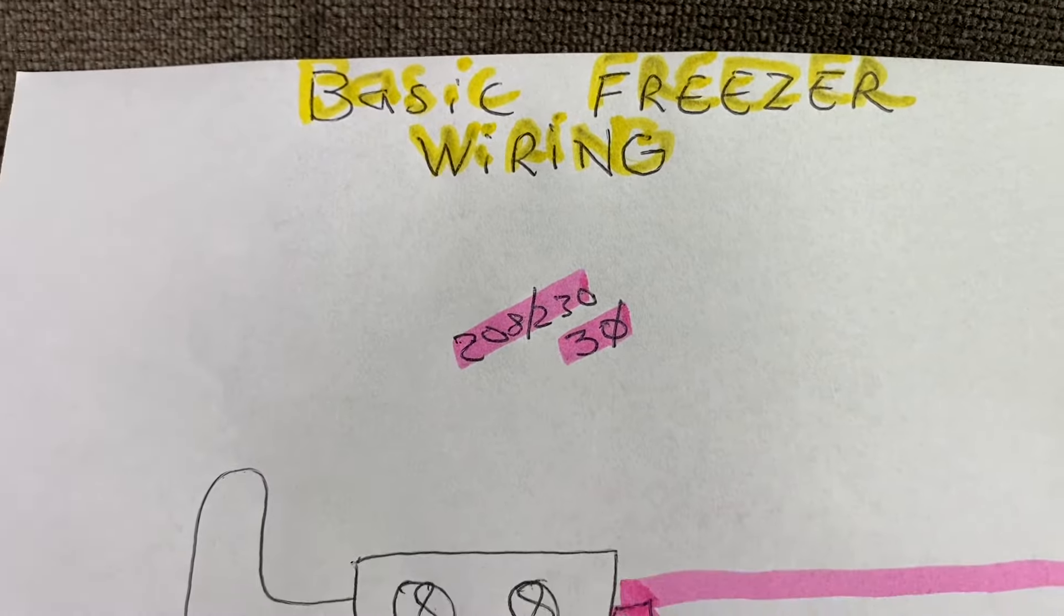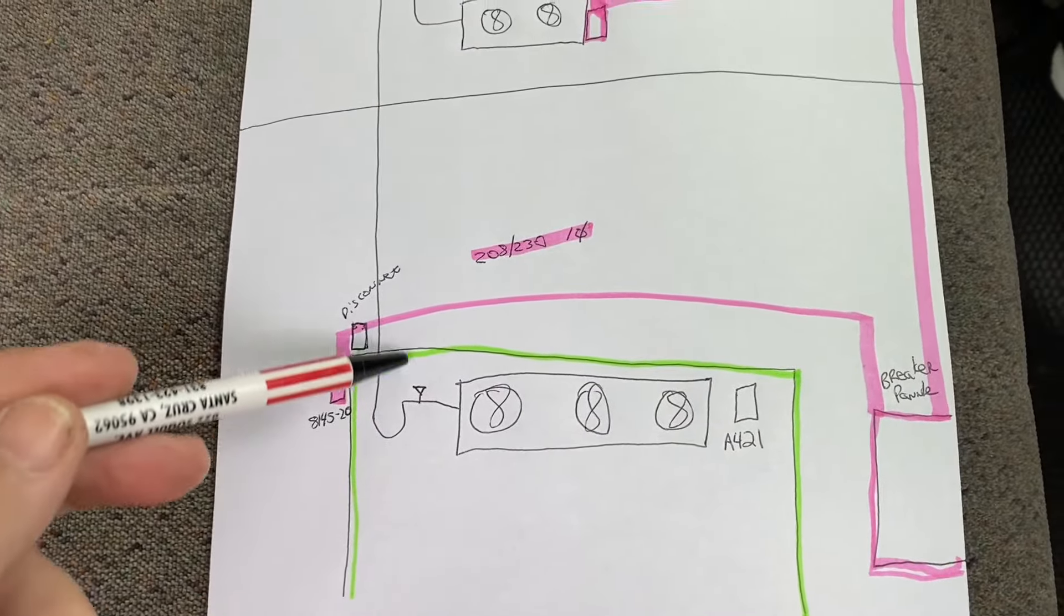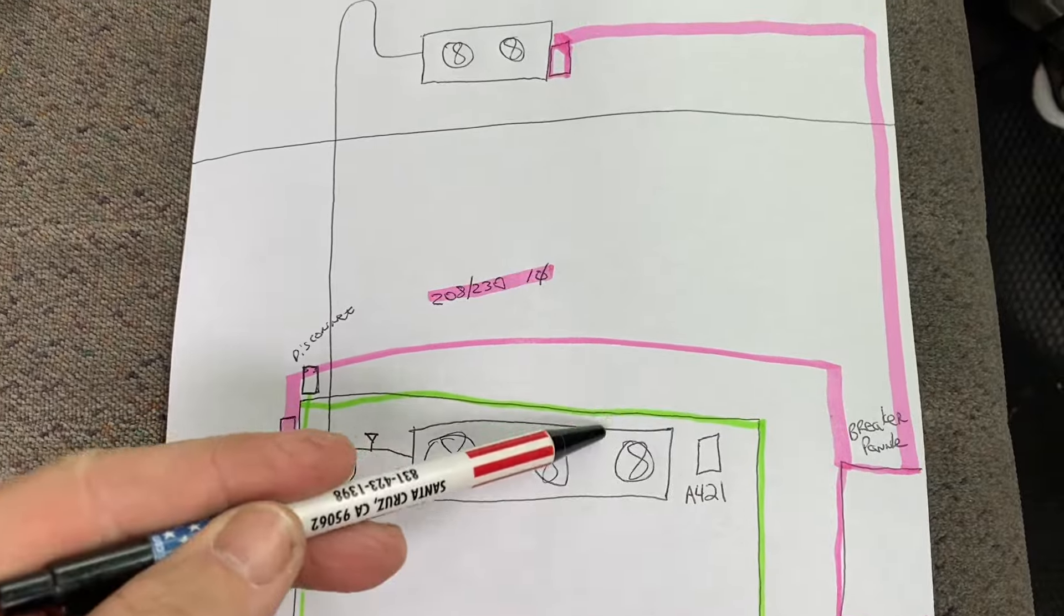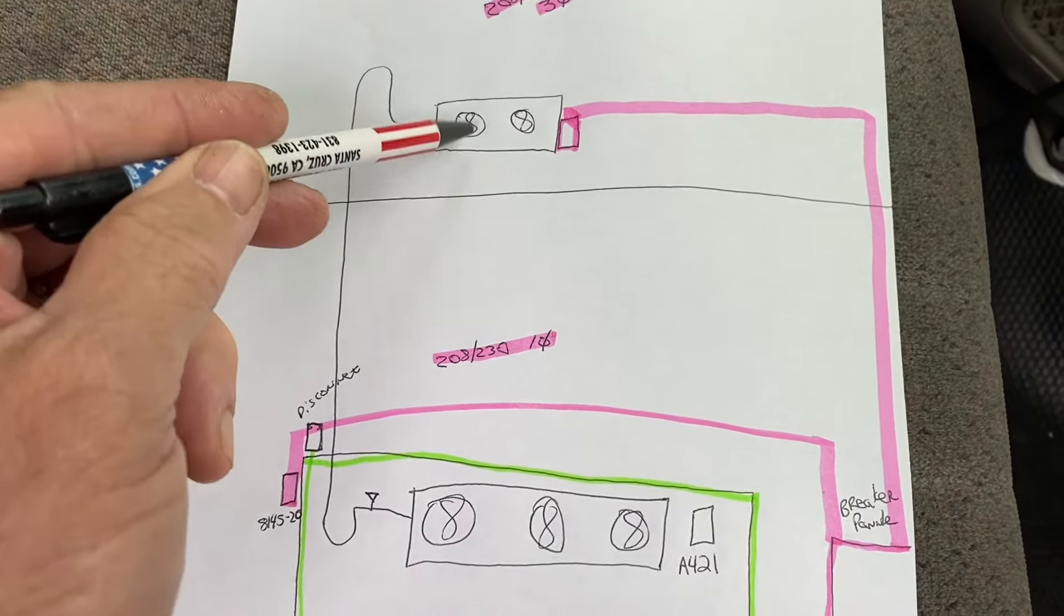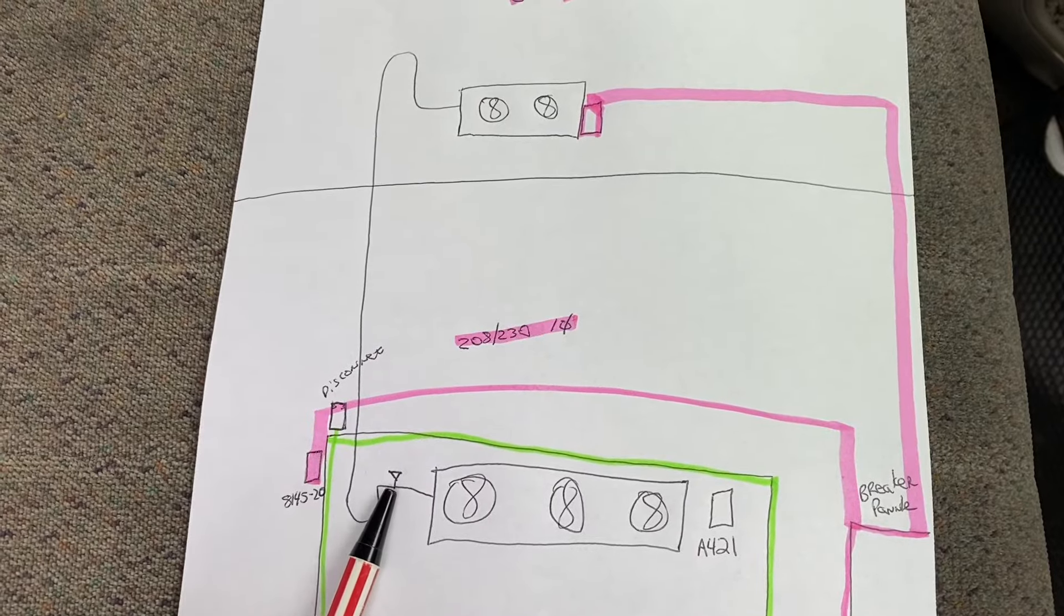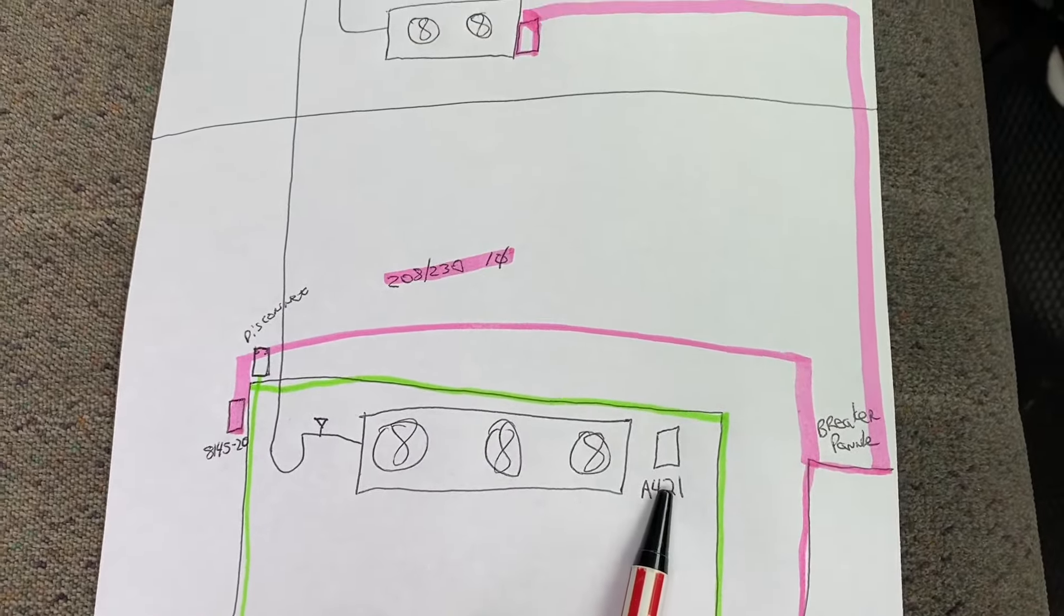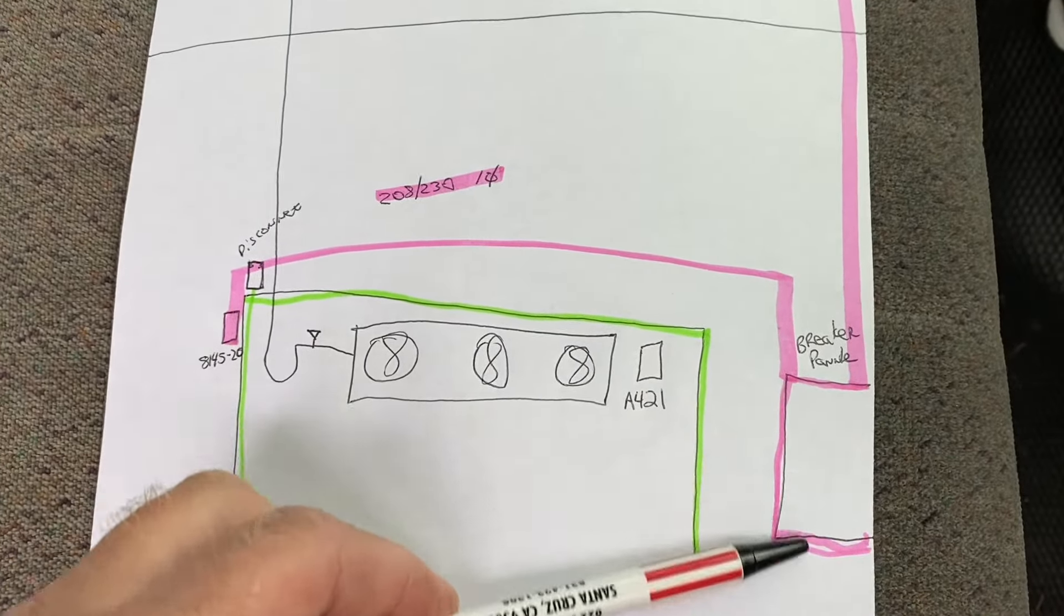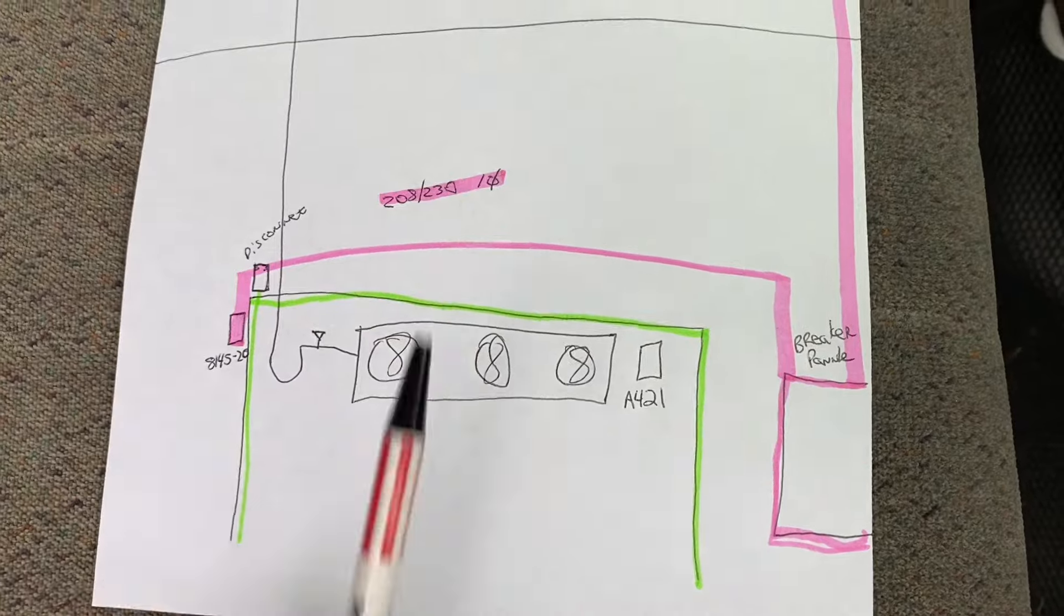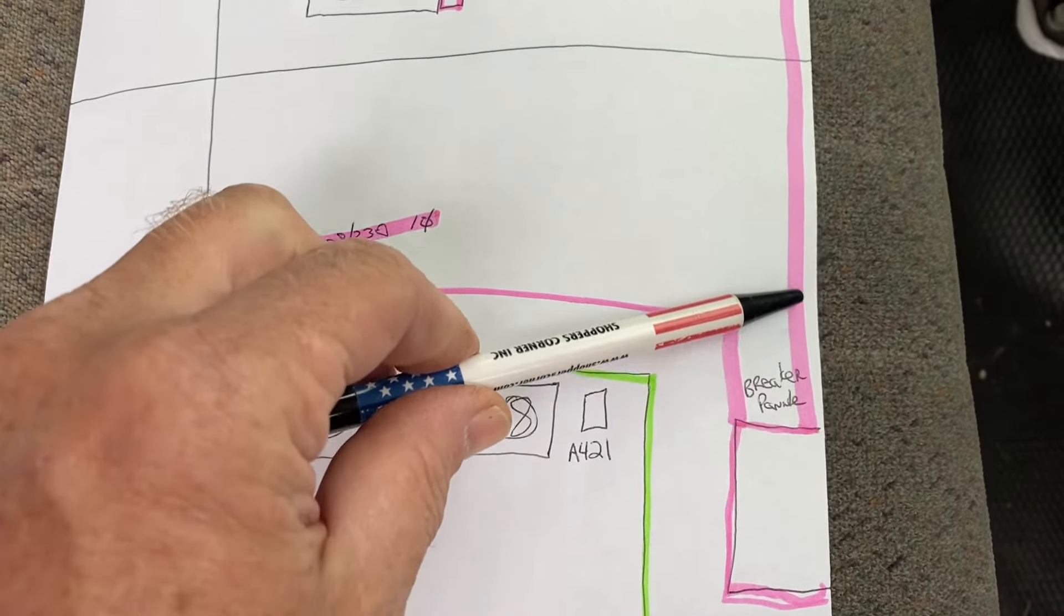Basic walk-in freezer wiring. This is our walk-in box. This is our evaporator coil. This is our line set up to our condensing unit. This is our liquid line solenoid valve. Our A421 electric thermostat. And this is our breaker panel at the building.